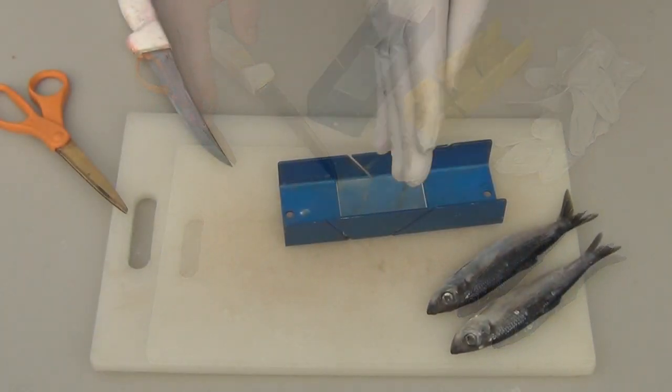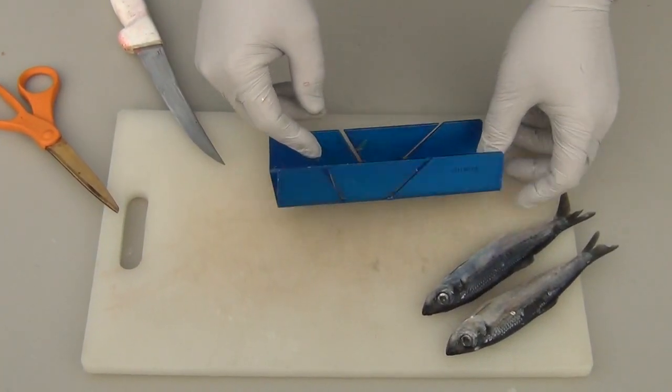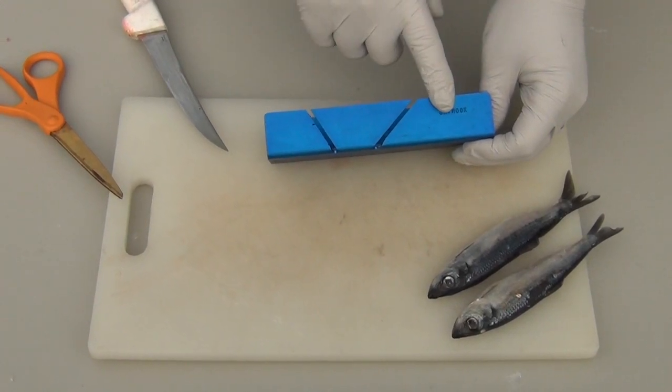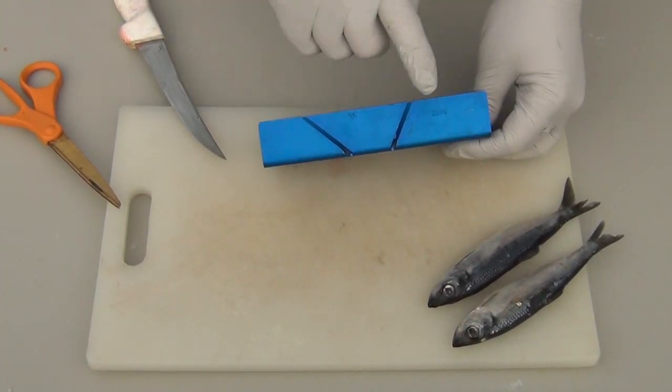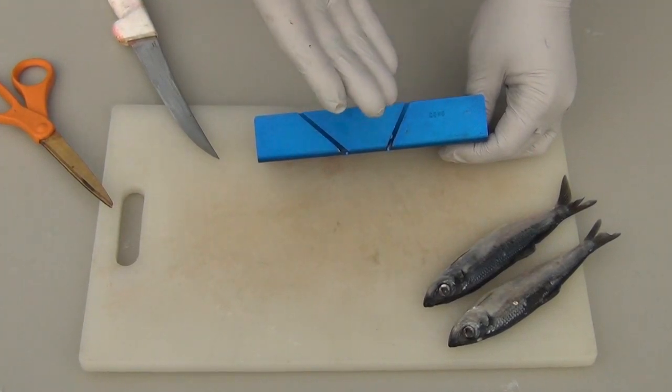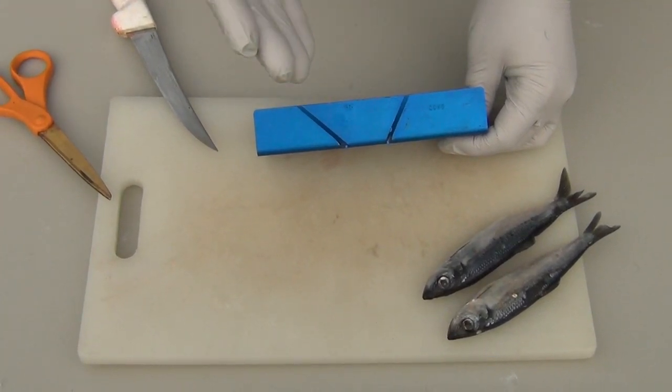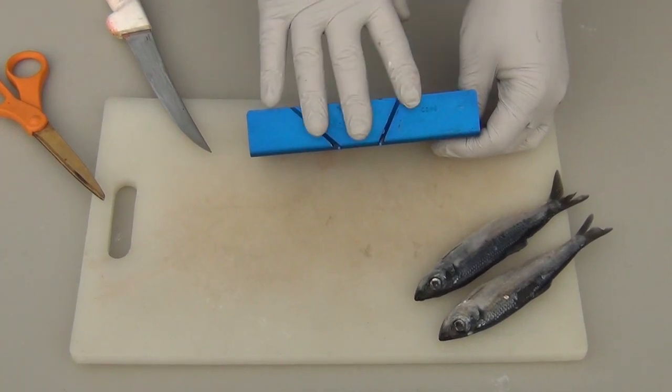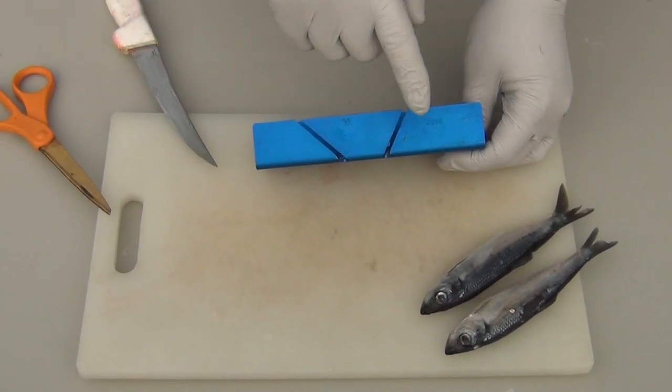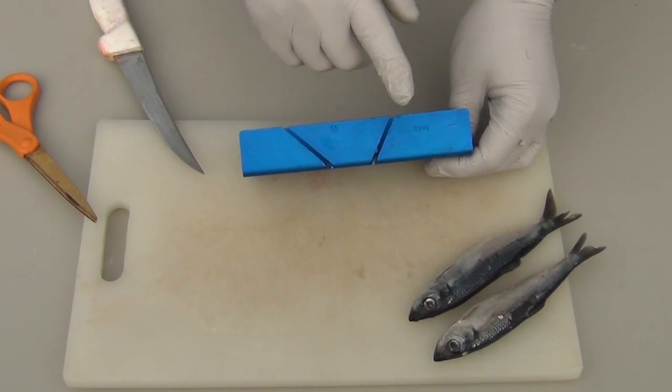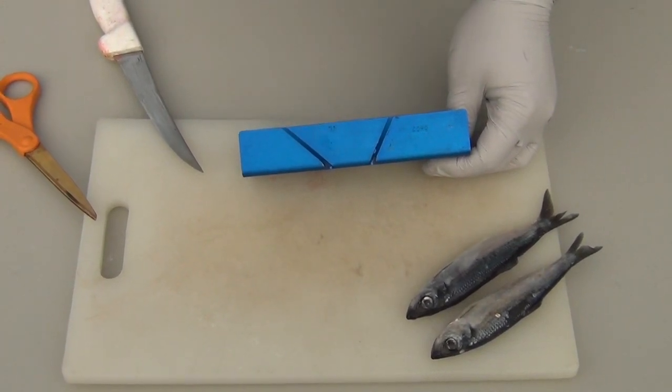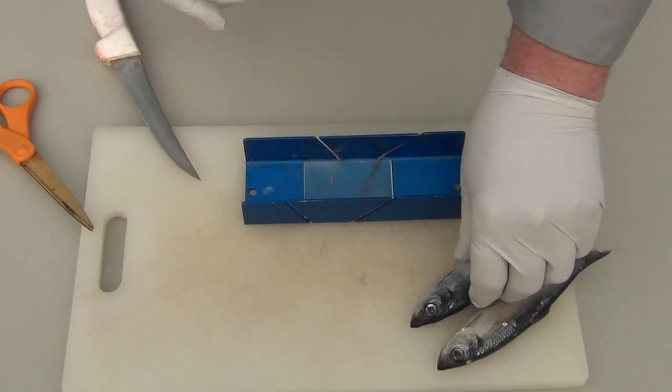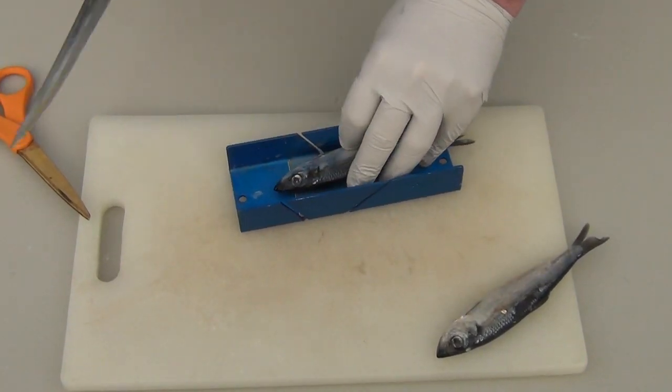So we've gloved up, we're going to keep our scent off of our herring and we've got our jig here. You'll notice on the jig one side says chinook, the other side says coho. The coho side has a tighter angle to it which causes the herring to spin tighter. When you're springer fishing, believe it or not, you'll want to cut on the coho side. You want your herring to spin as tight as you can get it to spin.